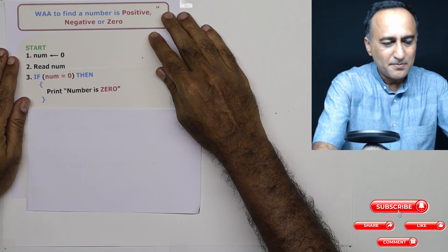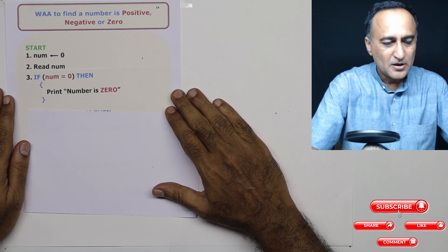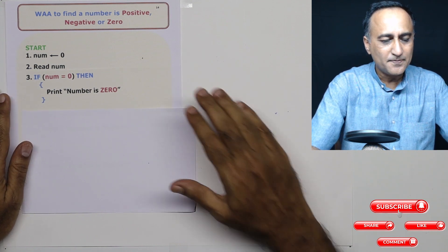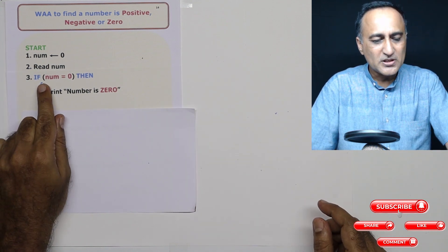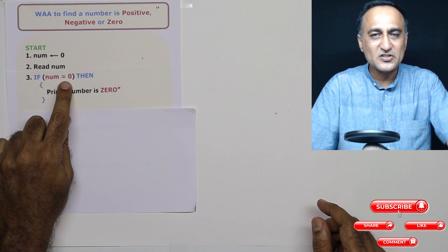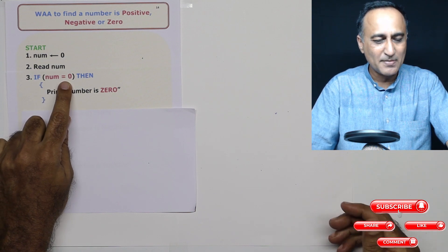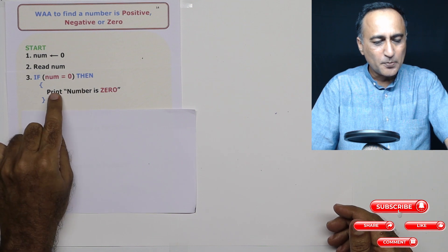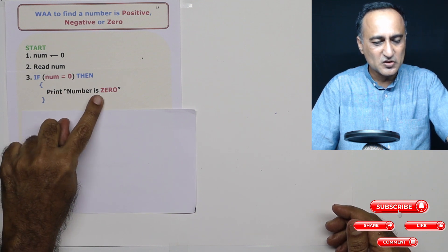So first thing is, I am reading a number. Once I read a number, first, I'm going to use the if to check if the number is zero. I'm doing it a little differently, doesn't really matter. If the number is zero, then I'm going to print the message number is zero.